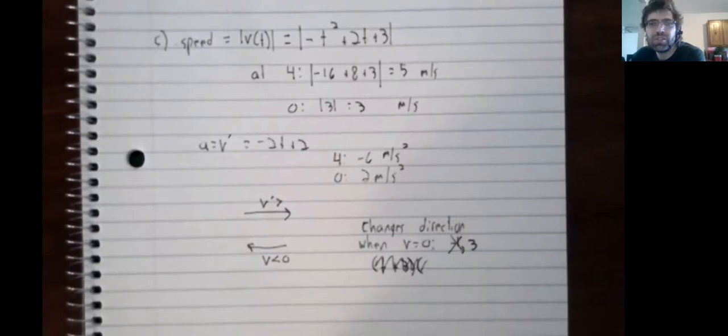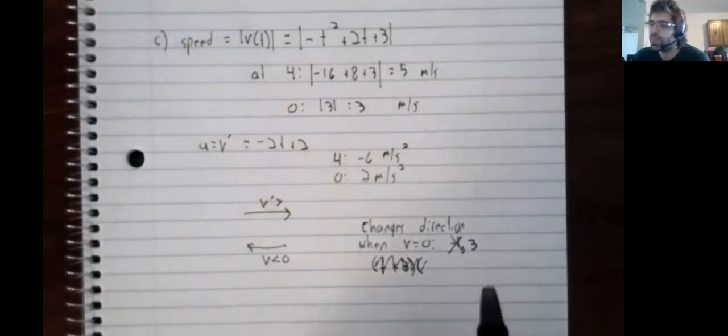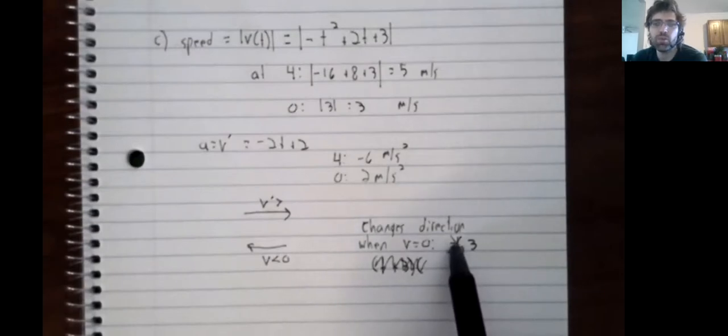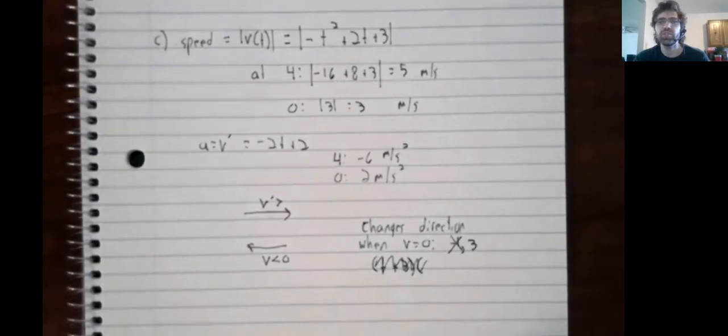And the acceleration is the derivative of the velocity. And the object changes direction when the velocity changes sign. So even if you're not explicitly asked for the velocity, it kind of pervades the entire question. One place where the velocity changes sign is outside of the interval we're looking at. So I crossed that out.